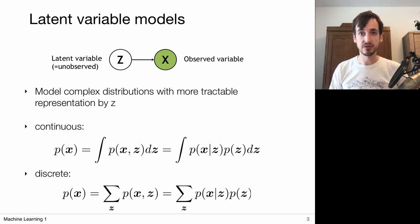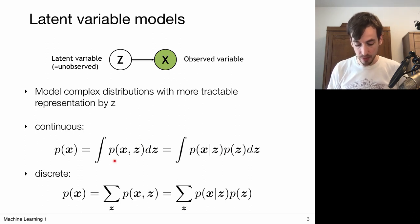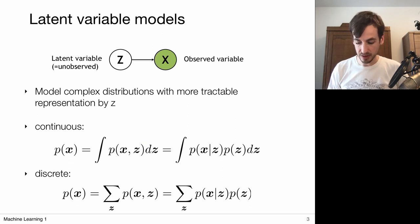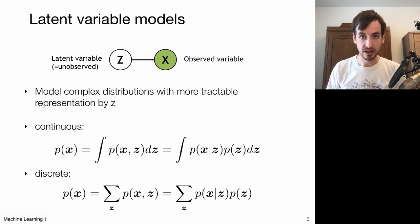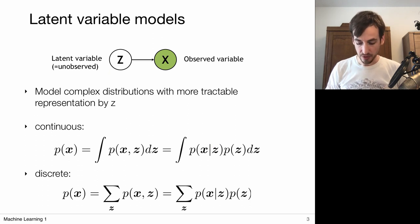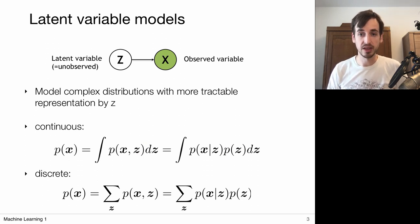We assume there is such a latent variable and therefore such a joint probability distribution. And that also means we can make this factorization: the joint is given by the conditional of X given my latent variable z, times the prior — the probability for z itself. Suppose I'm given such a latent variable — it tells me a lot about what kind of values for X I can expect. A different latent variable gives me a different distribution for X. So we have these latent variable conditional distributions, and we also need a prior probability for the latent variable itself.